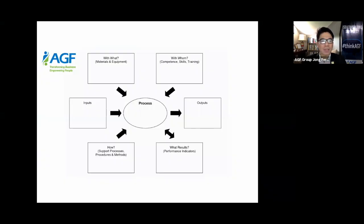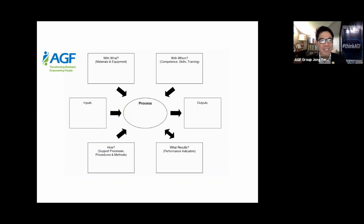The Turtle Diagram gives us a visual understanding — a visual map of how the process operates. Imagine the diagram as a turtle. In some templates you'll see an actual turtle image, but the key point is that oblong shape in the middle, which is why it's called the Turtle Diagram. It has six components — six parts.